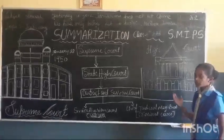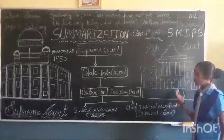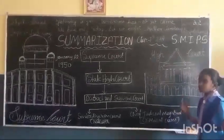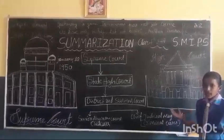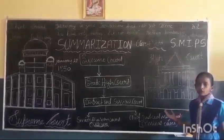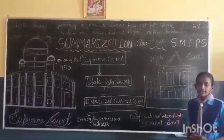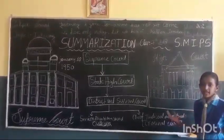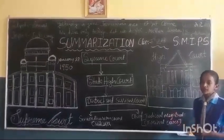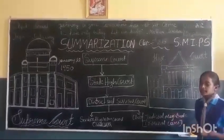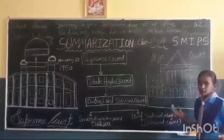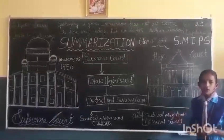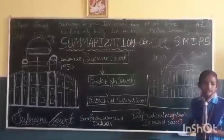The Constitution provides for a High Court in every state. Sometimes there is a High Court for two or more states. It consists of a Chief Justice and judges. The number of judges varies from state to state.